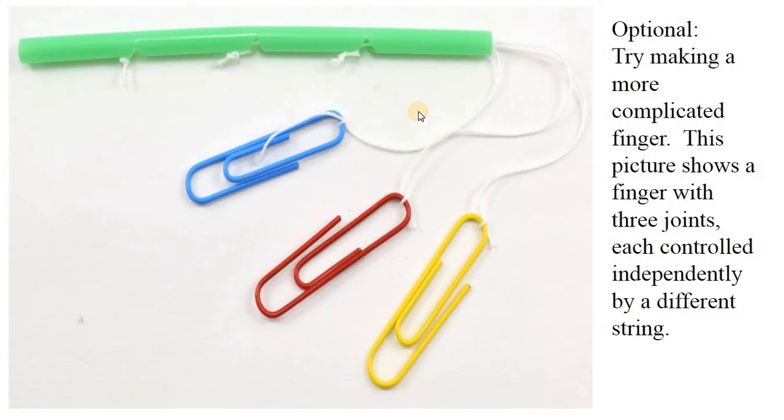Here's an optional design here where you put several notches, several joints. It's a more complicated design. This picture shows the fingers with three joints and each one is controlled independently by a different string. So when you pull on these, if you pull on one of these, it'll bend this one. If you pull on this one, these two, it'll bend here and see how this works.